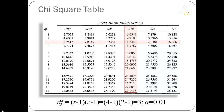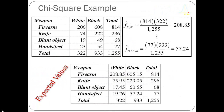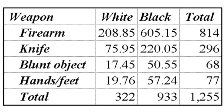Let's go ahead and calculate the statistic. The table in the upper left shows the raw values: for white criminals — 206 used a firearm, 74 used a knife, 19 used some kind of blunt object, and 23 used their hands or feet. The equivalent numbers for the black criminals are 608, 222, 49, and 54. The table at the bottom shows the expected values of each cell, which are calculated by multiplying the row marginal times the column marginal and dividing by the table total.